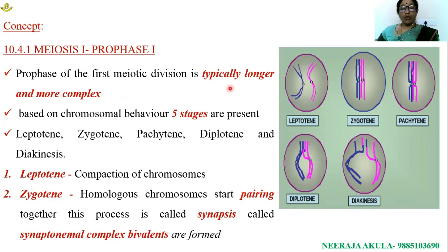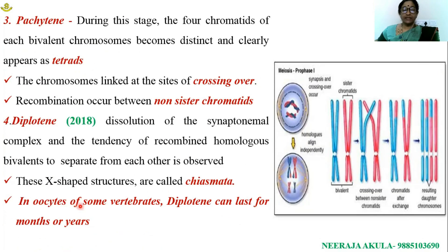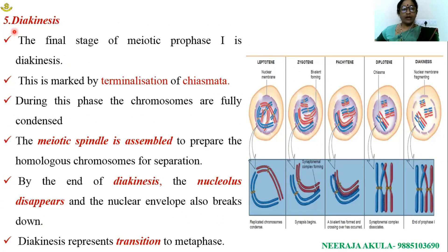Meiosis I prophase I is a longer and more complex phase, associated with five stages: leptotene, zygotene, pachytene, diplotene, and diakinesis. In oocytes of some vertebrates, diplotene can last for months or years. The last stage, diakinesis, is marked by terminalization of chiasmata.